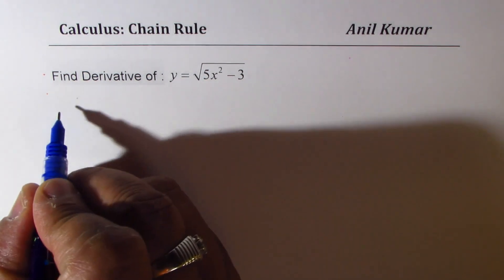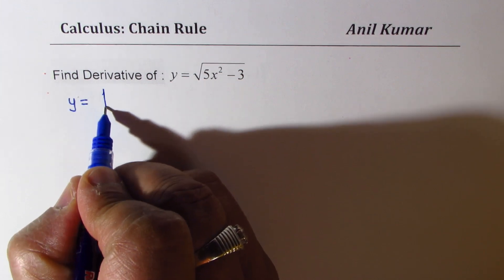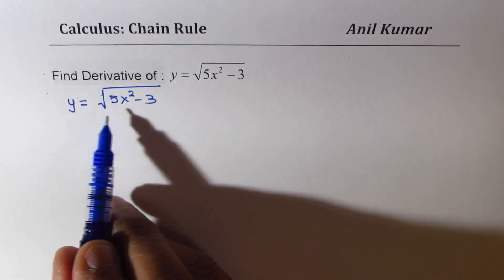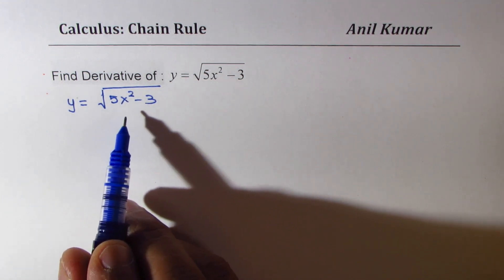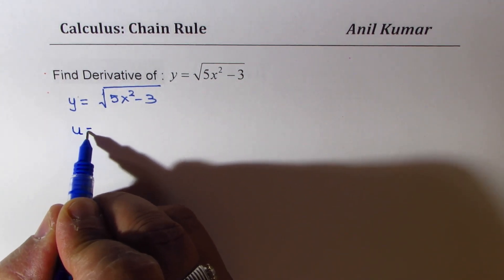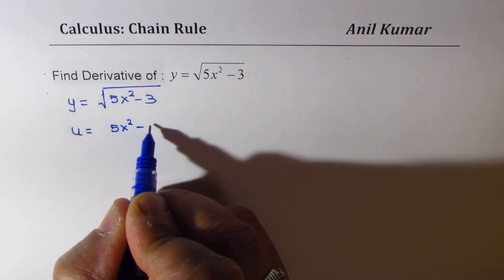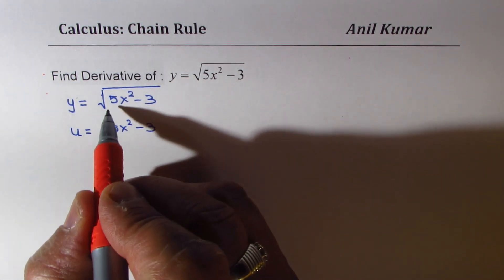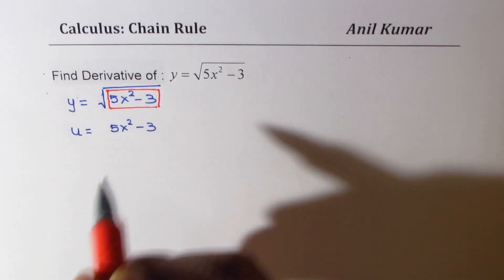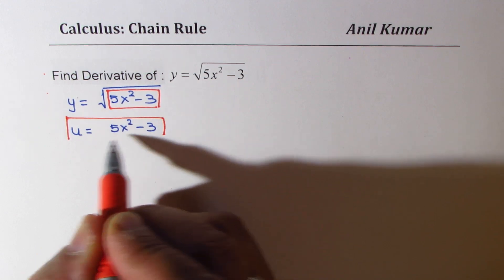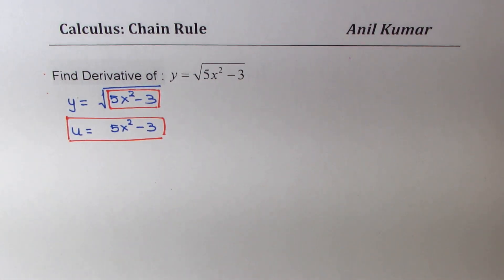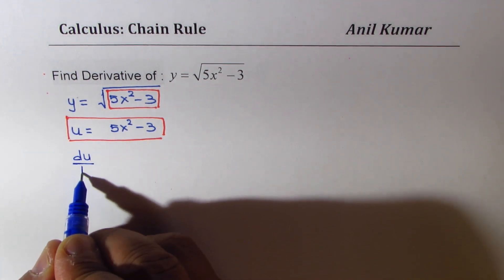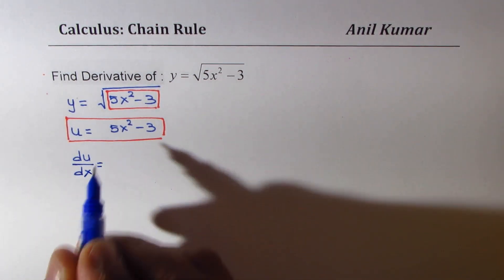We know y equals the square root of 5x² minus 3, and y is a function of x. What we can do is write u equal to 5x² minus 3 — that is the inside function. So this inside function has been defined as u. From here, the derivative of u with respect to x, du/dx, is 10x.